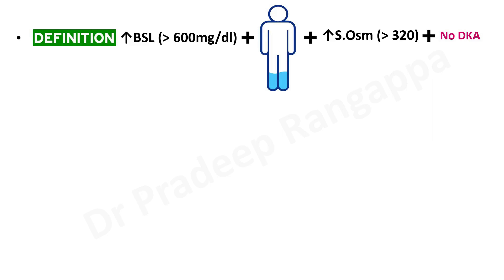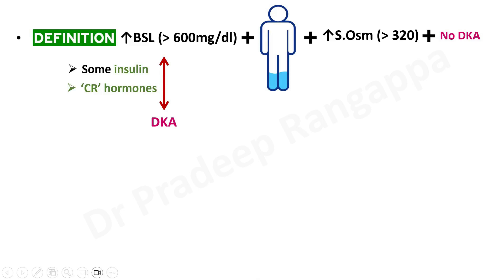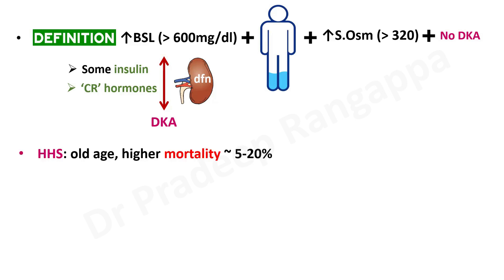Some key differences between HHS and DKA: in DKA, there is no insulin in the body, but in HHS there is some residual insulin present. The counter-regulatory hormones are much higher in HHS than in DKA. Acute kidney injury and renal dysfunction are more strikingly present in HHS than in DKA, where severe AKI is not typically seen. HHS tends to occur in older age.